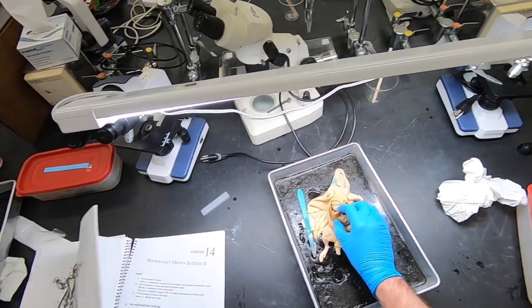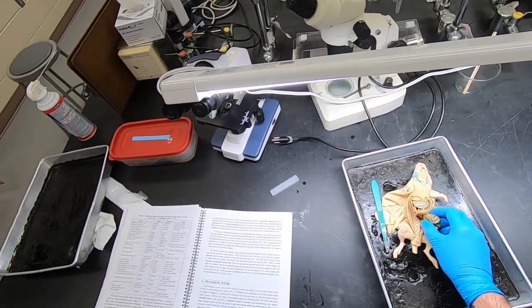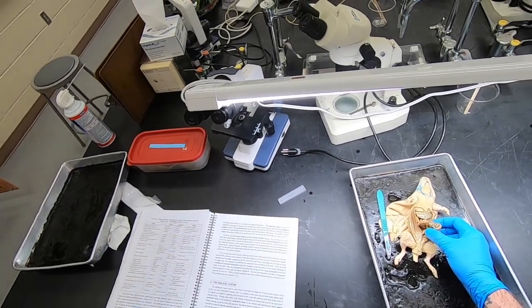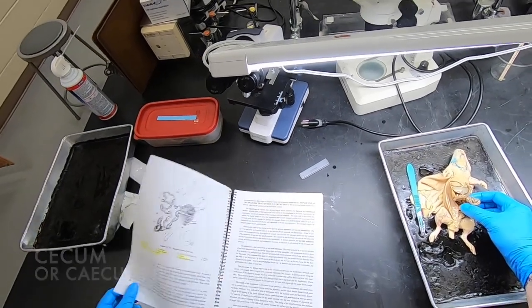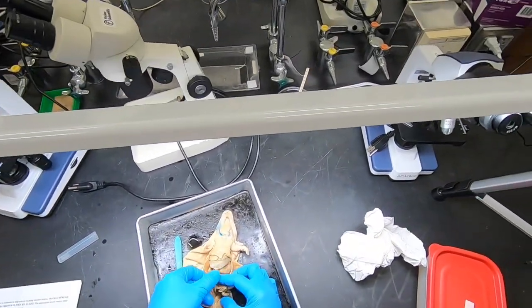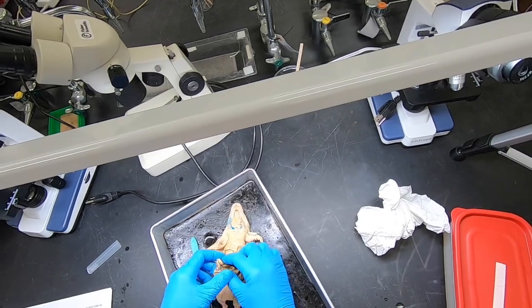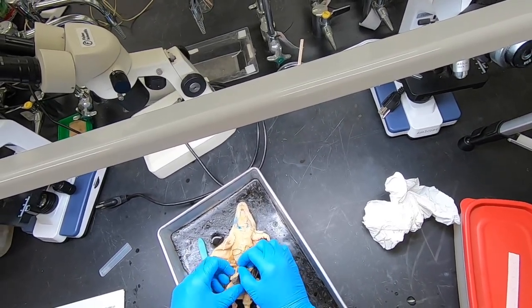At the end of the small intestine, we come back to the cecum. Recall the cecum is the structure which is homologous with our appendix.